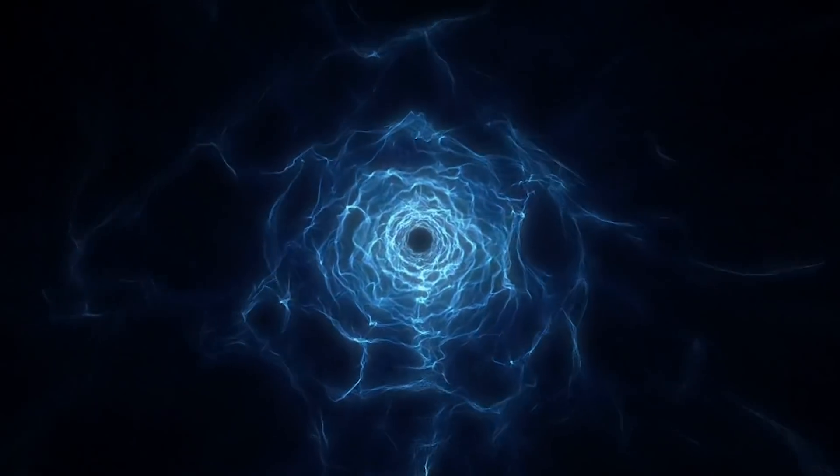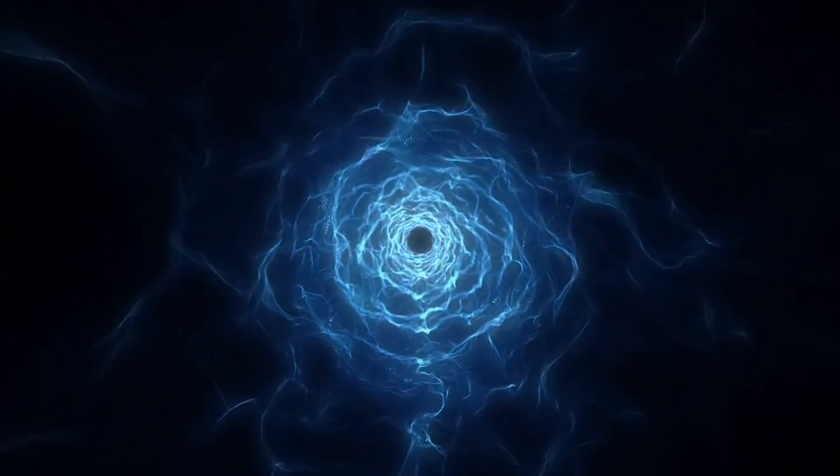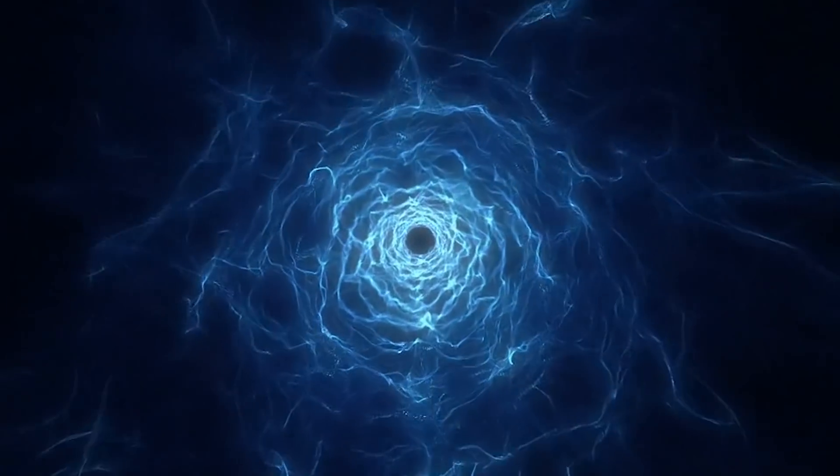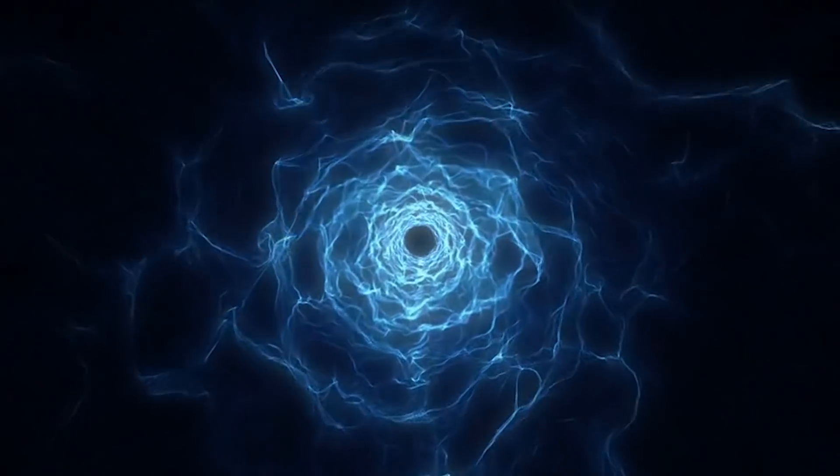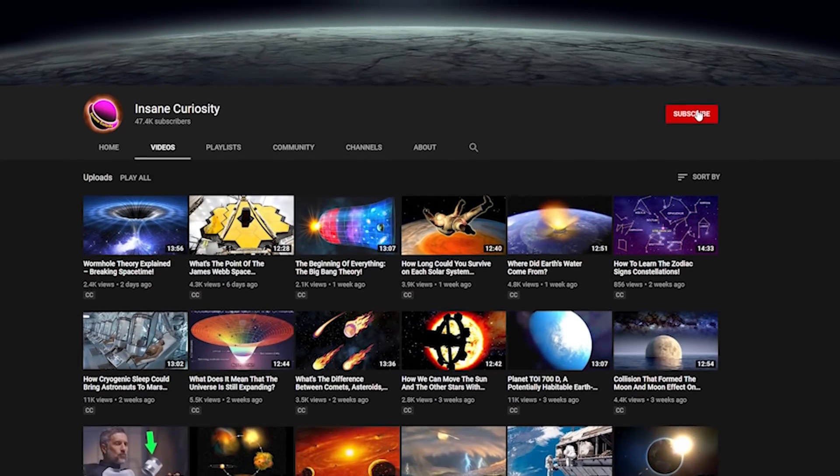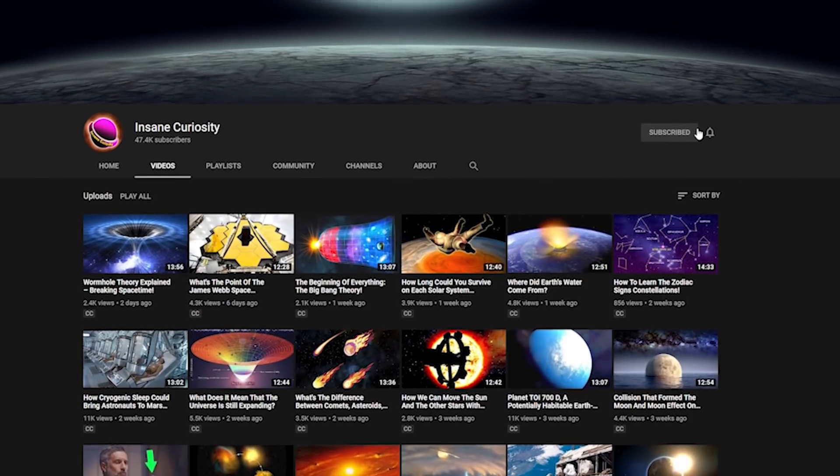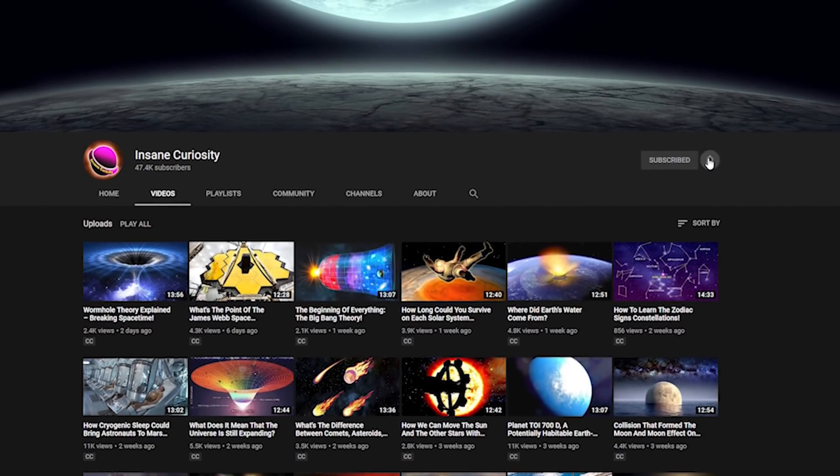Believe it or not, Einstein and others have noted that there are potentially 5 different kinds of wormholes. And yeah, some of those theories basically state that a black hole is a kind of wormhole, just one that isn't really ready for travel. Before we continue, be sure to like the video and subscribe to the channel, that way you don't miss any of our weekly videos.